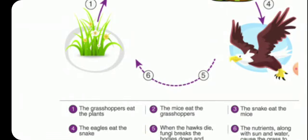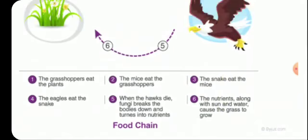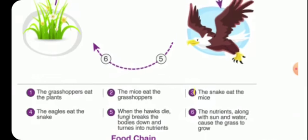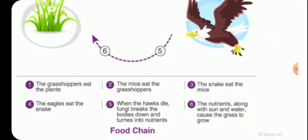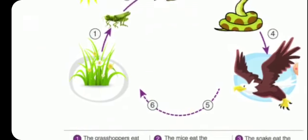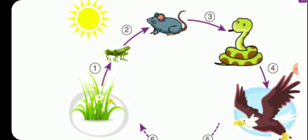The grasshopper eats the plants. The mice eat the grasshopper. The snake eats the mice. Then the eagle eats the snake. And when the hawks die, fungi break the bodies down and they turn into inorganic nutrients. And these inorganic nutrients along with sun and water, they help the plants in the process of photosynthesis. And plants are called as producers. So this cycle goes on and on.